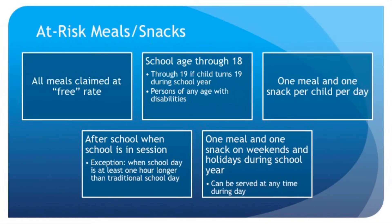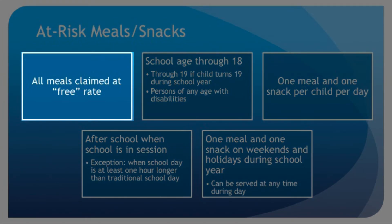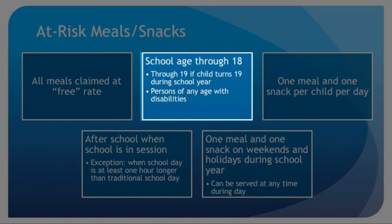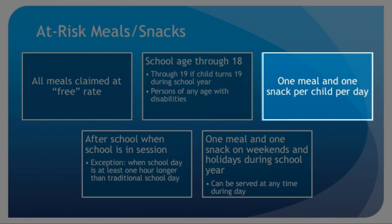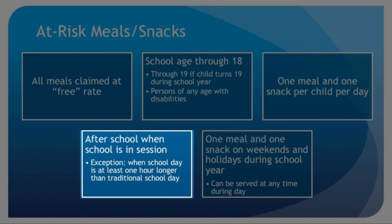Another special provision of the at-risk program is that all meals are claimed at the free rate without income applications. School-aged children through 18 years may be claimed, and through 19 if the child turns 19 during the school year. Participants of any age with disabilities may be claimed. Only one meal and one snack may be claimed per child per day. Meals and snacks may be served only after school when school is in session.